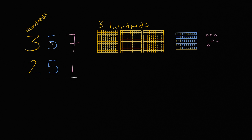Then we have a five in the tens place. That represents one, two, three, four, five tens. Five tens.